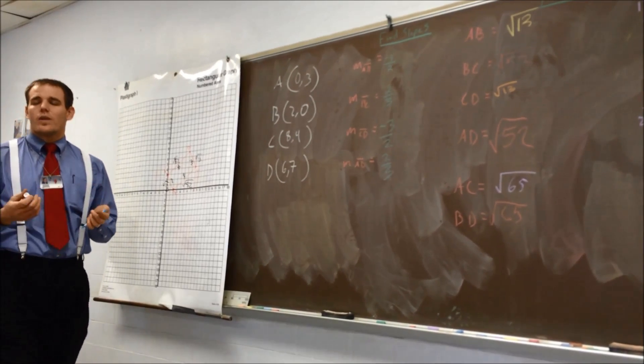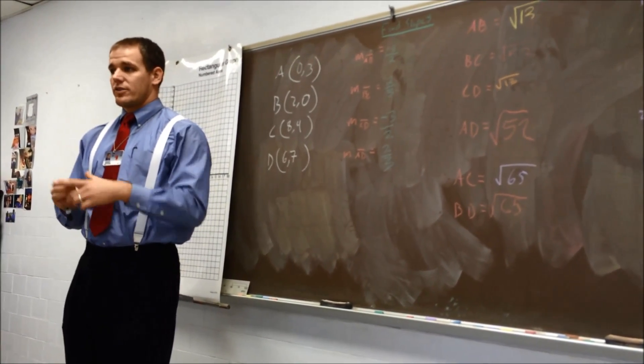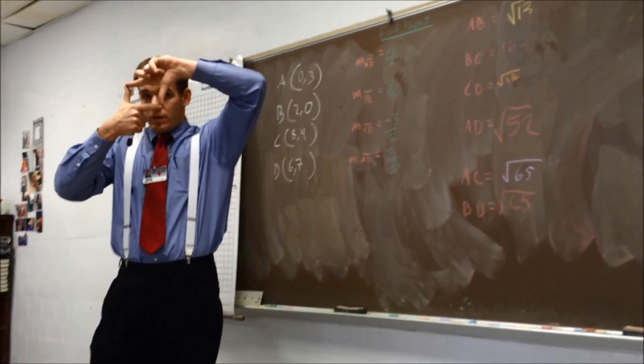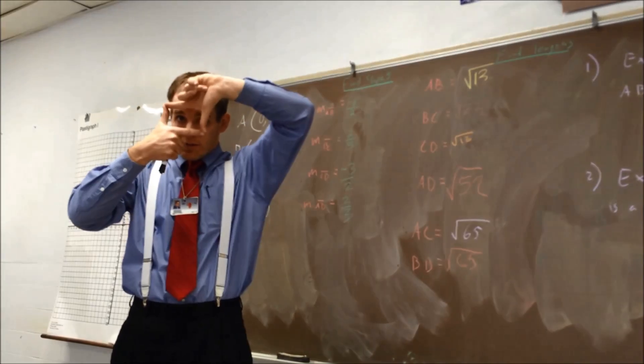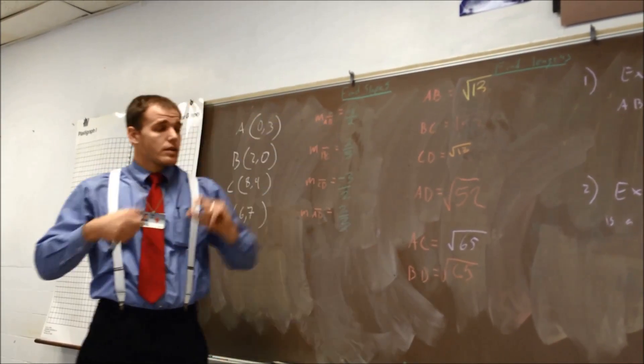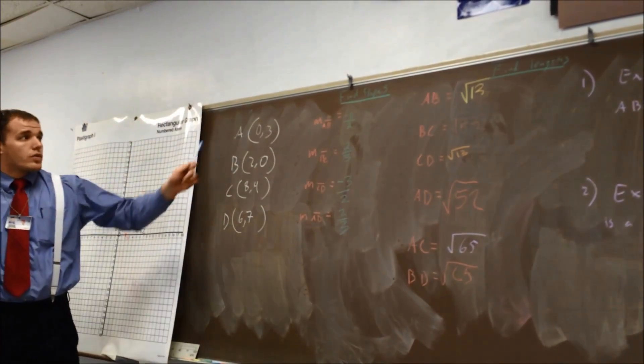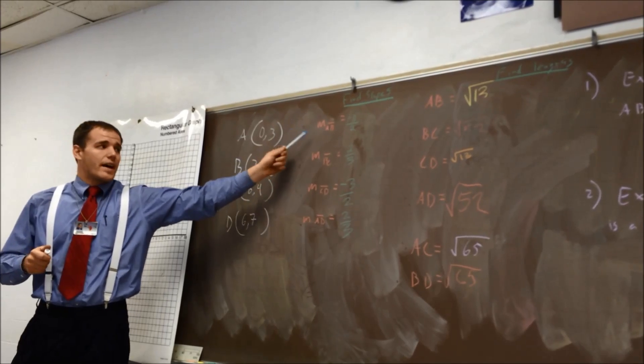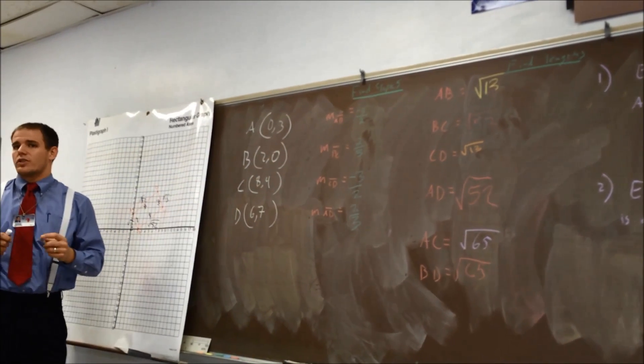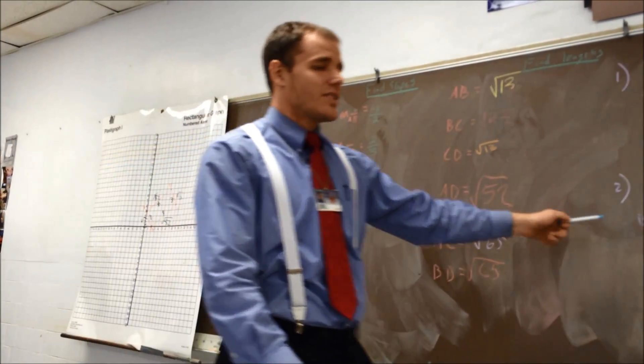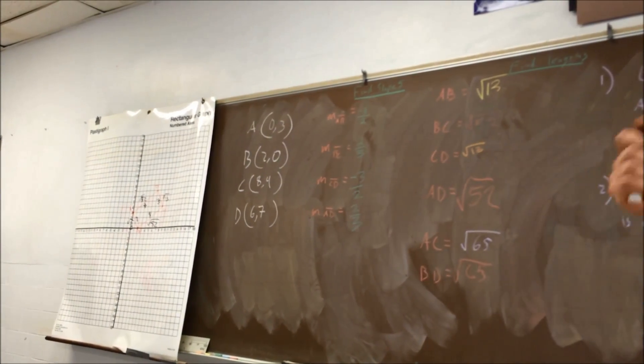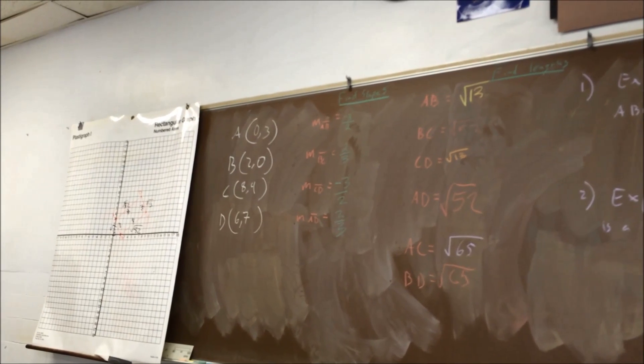Now, what do you know about rectangles, what do you know about the angles in rectangles? They're all 90 degrees. They're all 90 degrees, so what kind of angles are they? Right angles. Right angles, alright. How can we tell based on the slopes if those are going to be right angles? Discuss with your teammates, write down, explain why ABCD is a rectangle based on the slopes. I'm going to give you 20 seconds to talk it out, go.